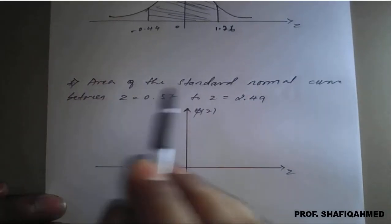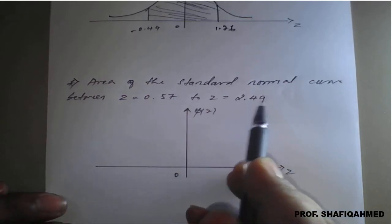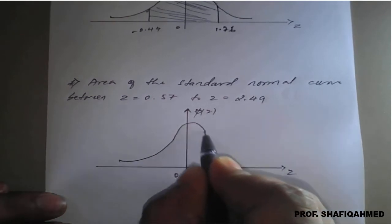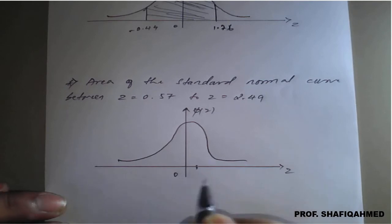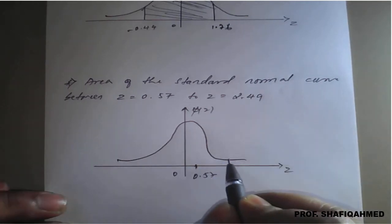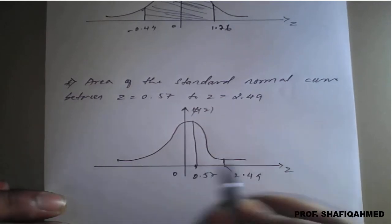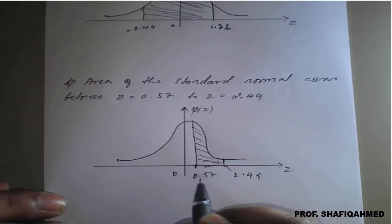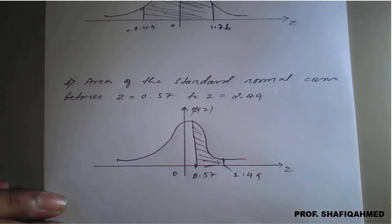Next, find the area of the standard normal curve between z equal to 0.57 and z equal to 2.49. Drawing the curve: both values are positive, so z equal to 0.57 is somewhere to the right of center and z equal to 2.49 is further right. We draw vertical lines at both points and shade the area between them — this area is from 0.57 to 2.49.